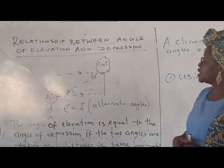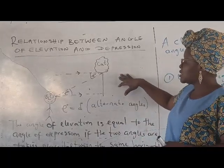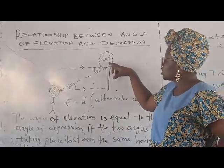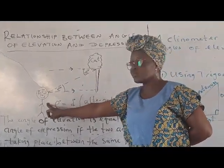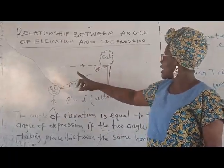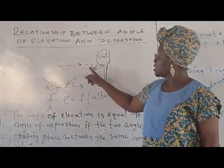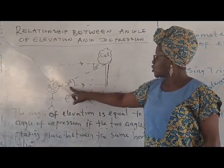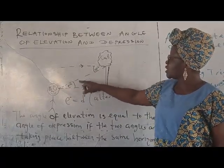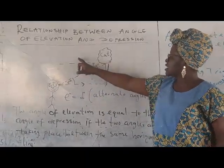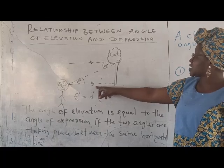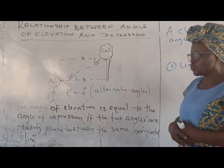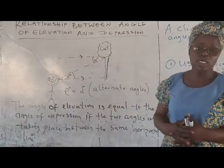Let's look at the relationship between the angle of elevation and depression. We have a cat on a tree. The angle formed between the horizontal and the line of sight of the cat looking down at Emanuela is the angle of depression, while the angle at which Emanuela looks up at the cat is the angle of elevation. Since the two angles occur on the same horizontal, and this line is parallel to that line, the angle of depression equals the angle of elevation because they are alternate angles. That is the relationship between the two.